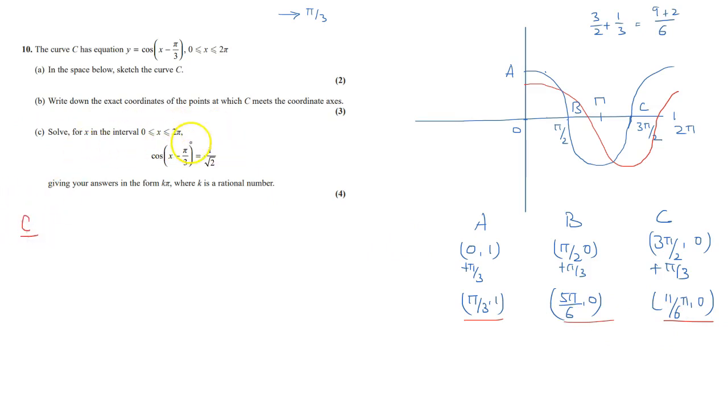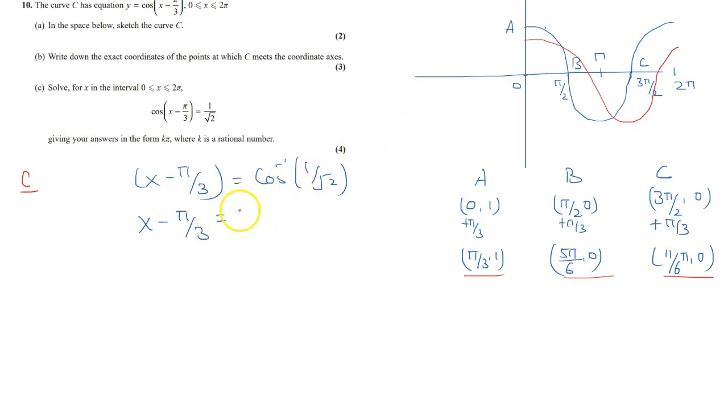Part C. Solve for x. So we have cos of x minus pi over 3 equals 1 over root 2. We can write it as x minus pi over 3 is equal to cos inverse 1 over root 2. So this is 45 degrees. 45 degrees means this is pi over 4. This is 45 degrees. So one is angle this. Another one is angle this. This angle will be 315.